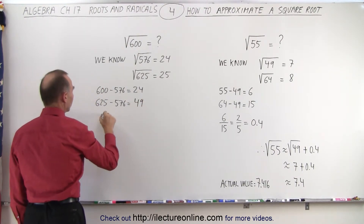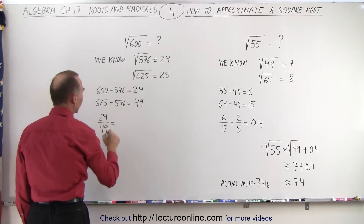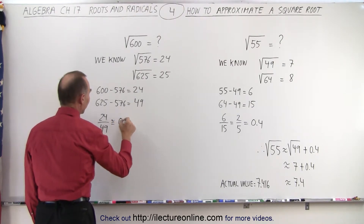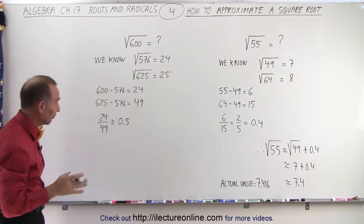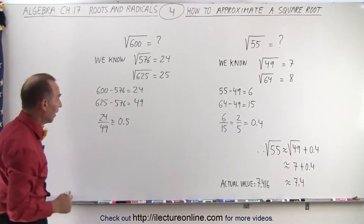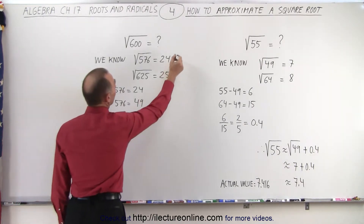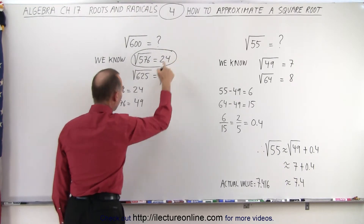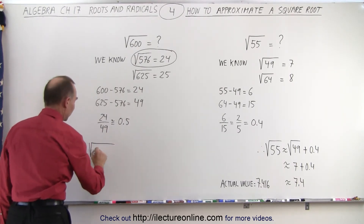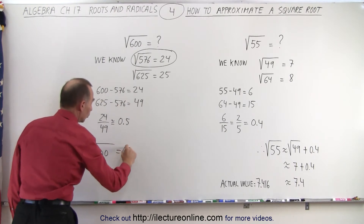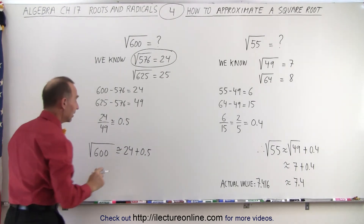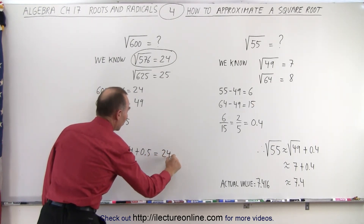So now we take that ratio: 24 divided by 49. That's approximately equal to 0.5 — since 24 divided by 48 is 0.5, so 24 divided by 49 is just a little bit less than 0.5. Now we take the square root of 576, which is 24, add 0.5 to that, and we'll get close to the square root of 600. So the square root of 600 is approximately equal to 24 plus 0.5, which is approximately 24.5.